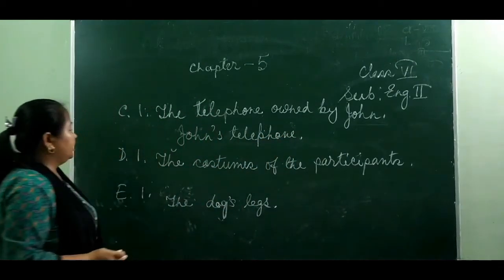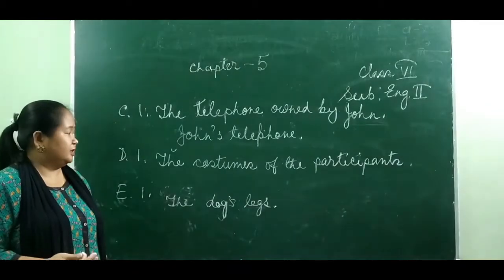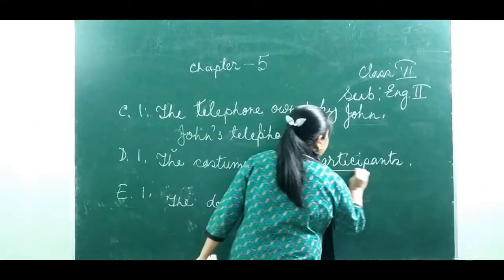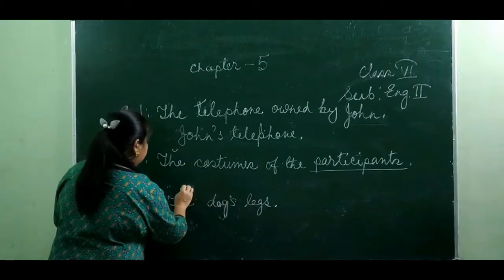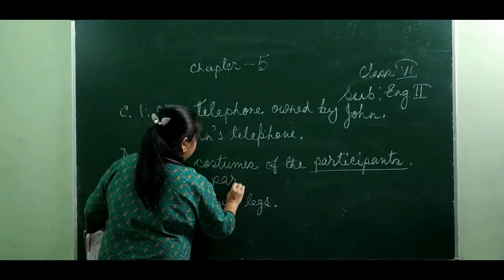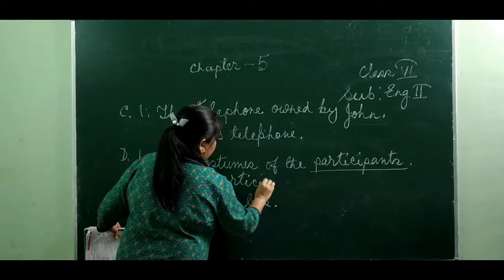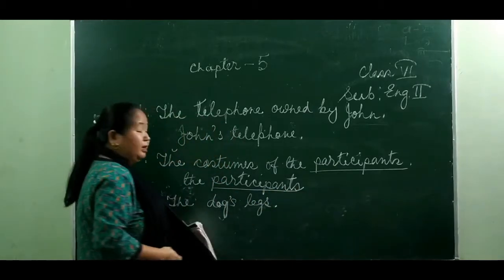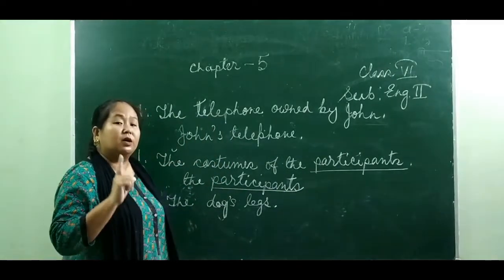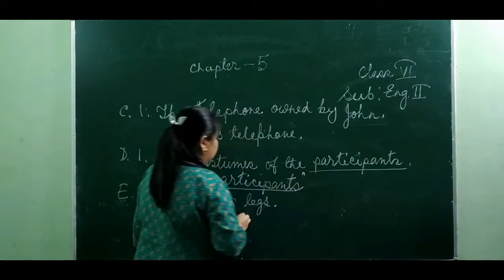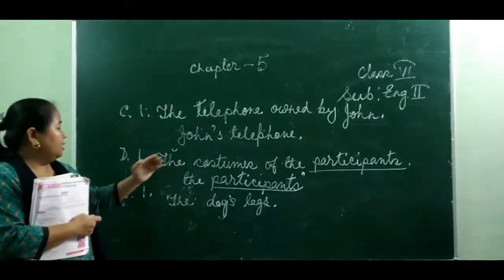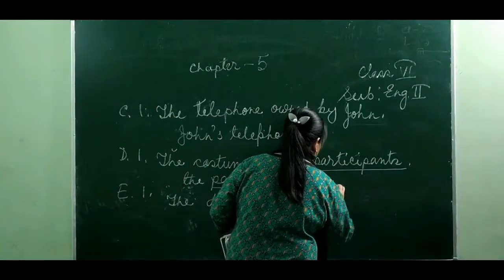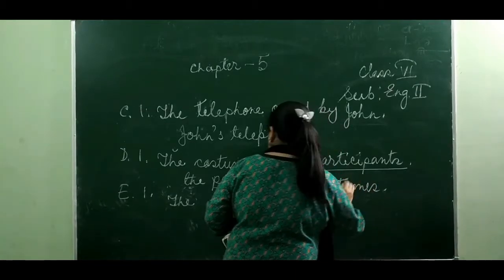Next: 'The costumes of the participants.' The costumes belong to the participants. Now, 'participants' is a plural noun and it ends in S, so we need only the apostrophe — not apostrophe and S. We write 'the participants' costumes.'